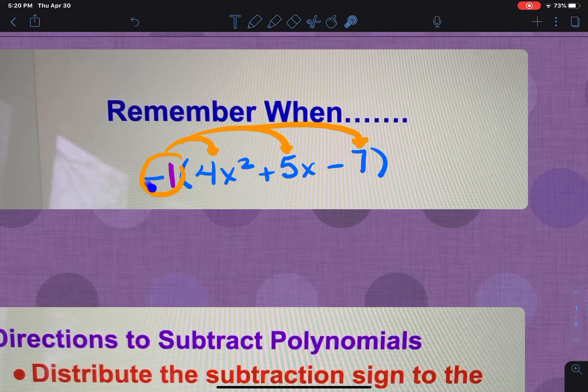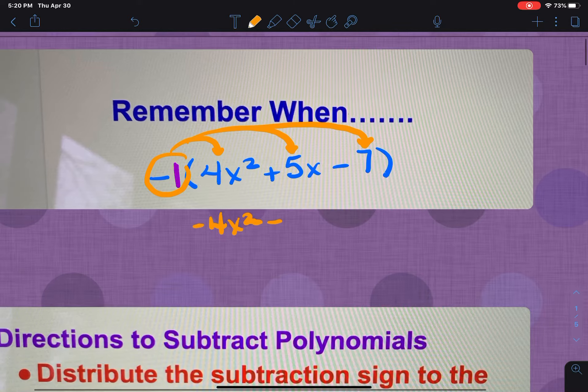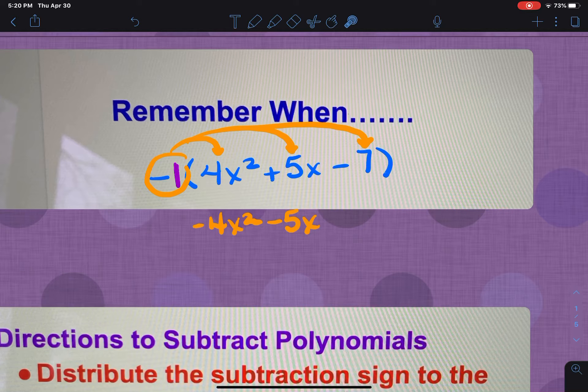So in this one, if I do negative 1 times positive 4x squared, it's going to be negative 4x squared. Negative 1 times positive 5x is going to be negative 5x. And negative 1 times negative 7 is going to be positive 7. So when we go to subtracting, we're going to use this concept.